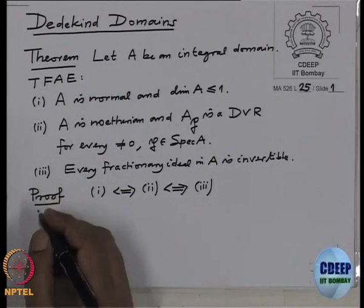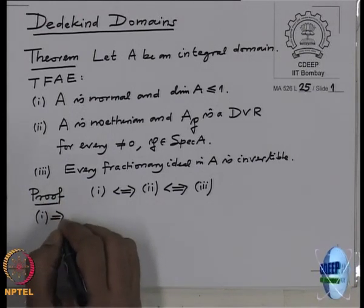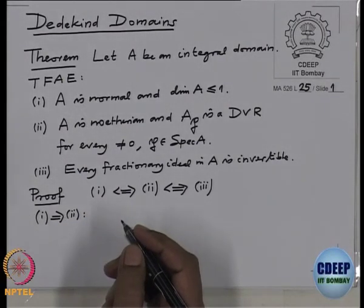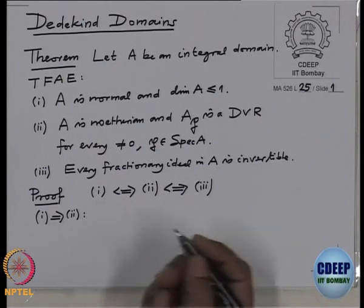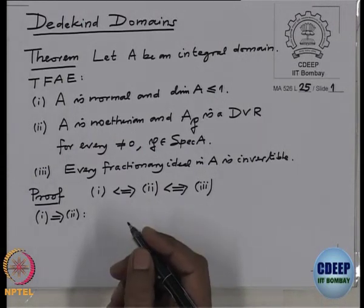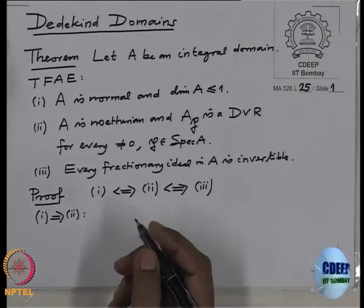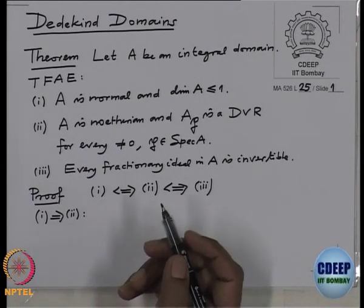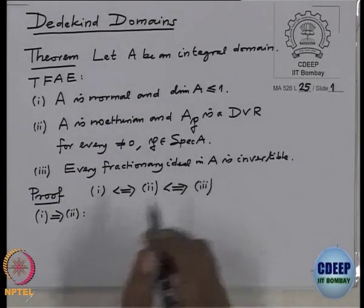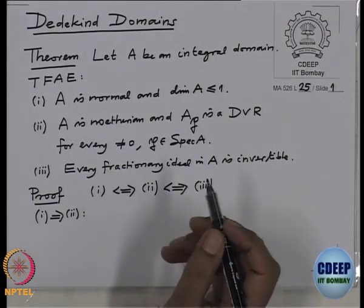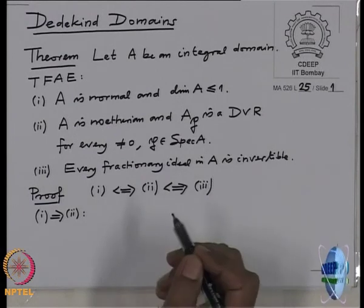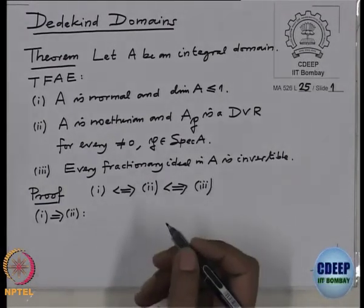Let us first do one implies two. A is normal — so Noetherian, dimension less than or equal to one — so there can only be prime ideals of height zero or height one. So if it is a nonzero prime ideal, then it has to have height one, because it's a domain.